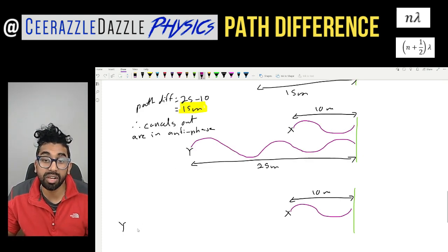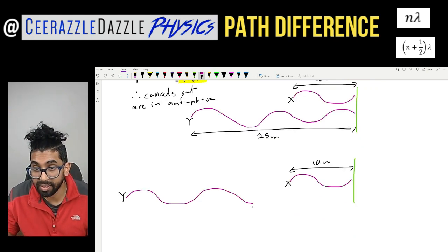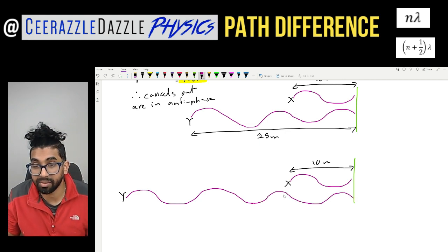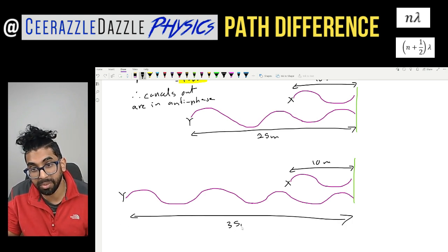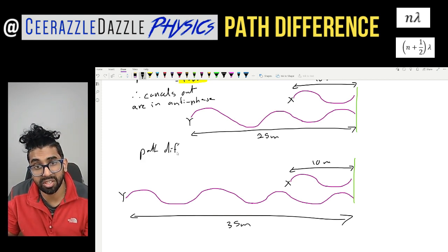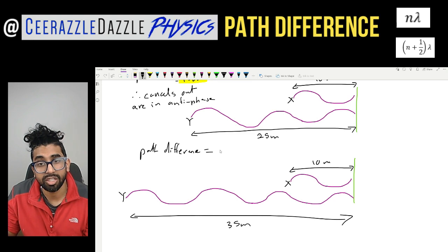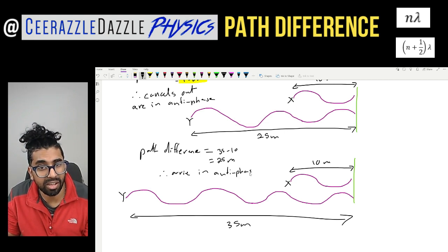Now Y is shifted to 35 meters. The path difference is 35 minus 10, which equals 25 meters. The waves still arrive in antiphase and cancel out.